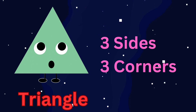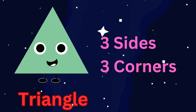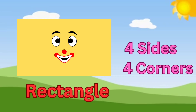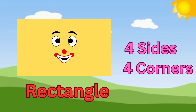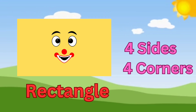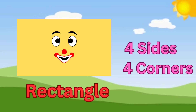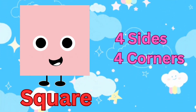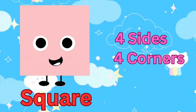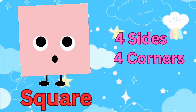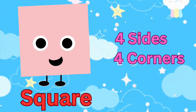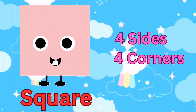I'm a triangle. I have three sides and three corners. I'm a rectangle. I have four sides and four corners. I'm a square. I have four sides and four corners.